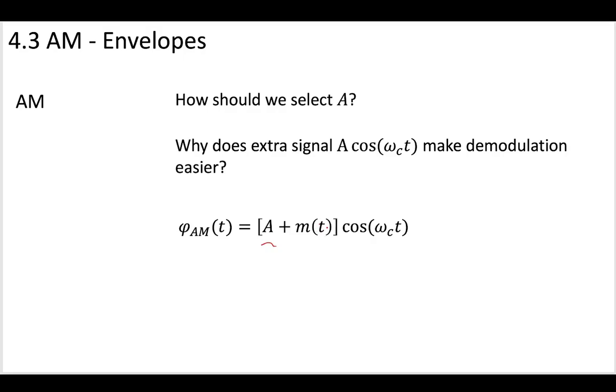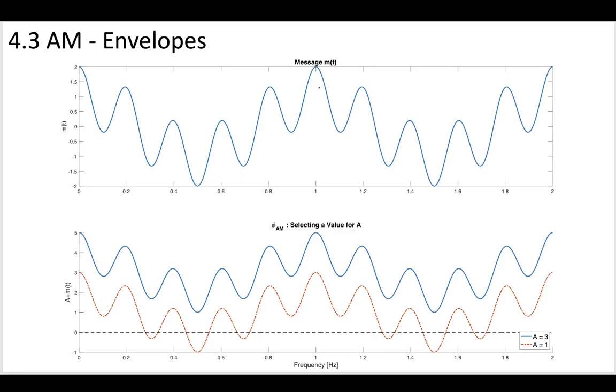So in order to do this, let's pursue a bit of a graphical approach here for a moment. So consider your message m(t), and this message is like two cosine waves that are added together.